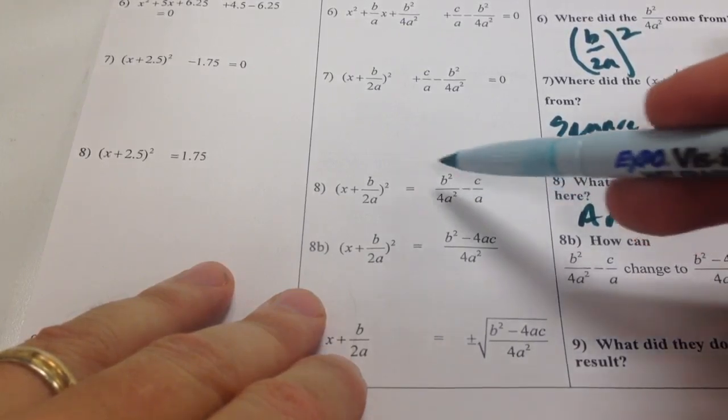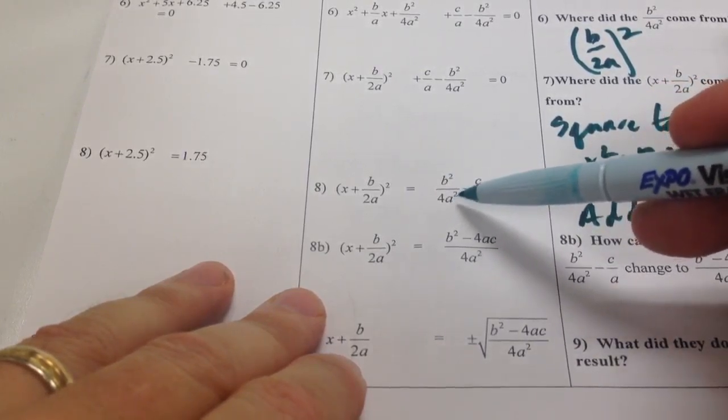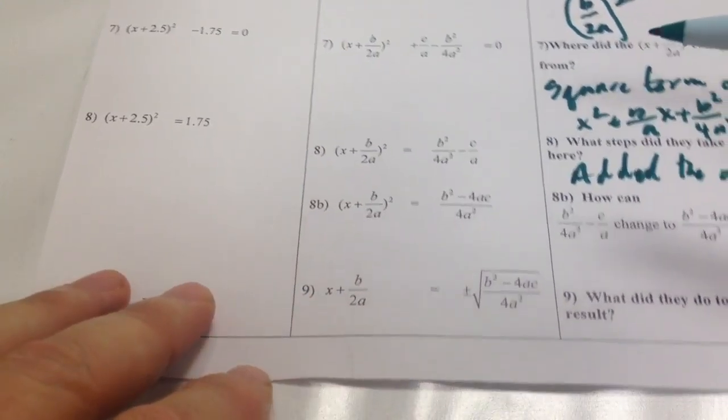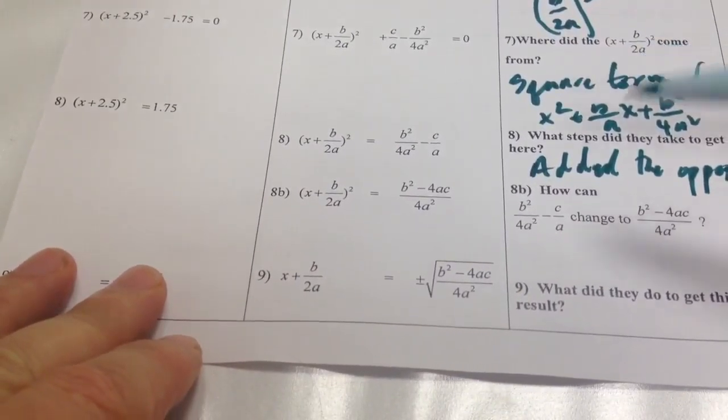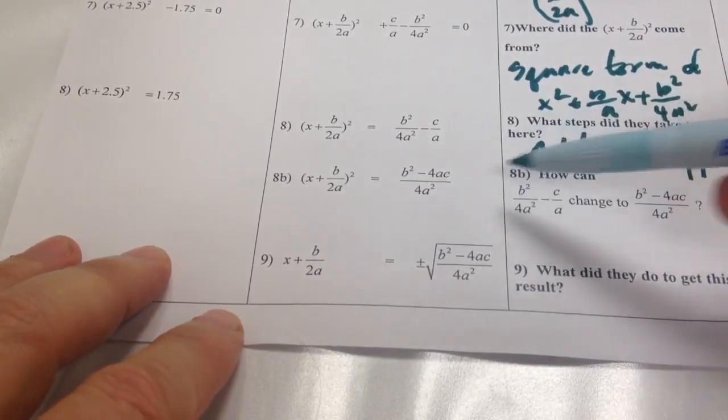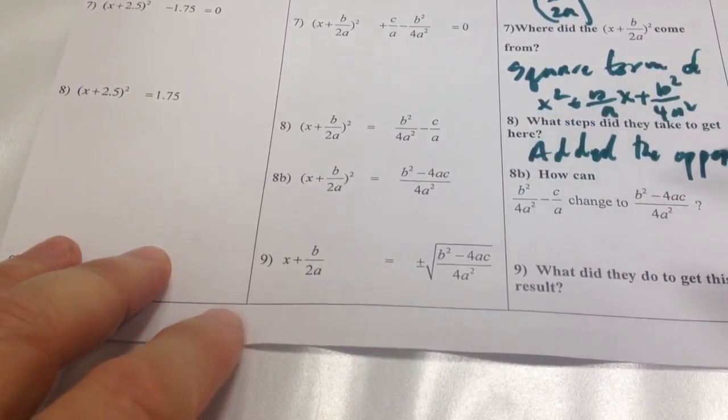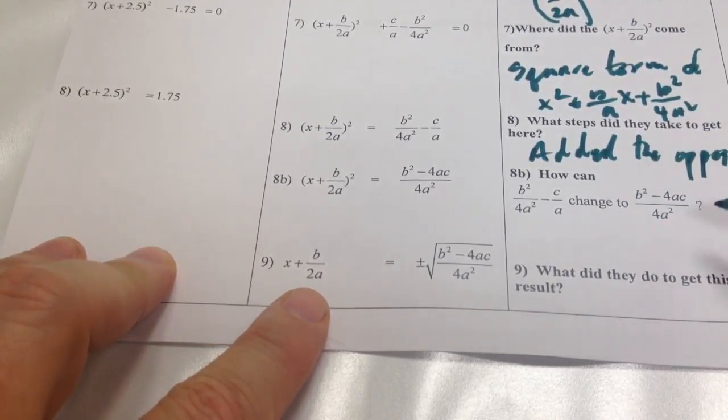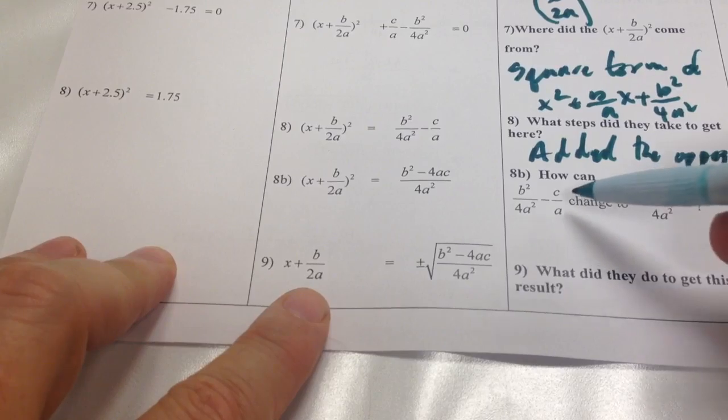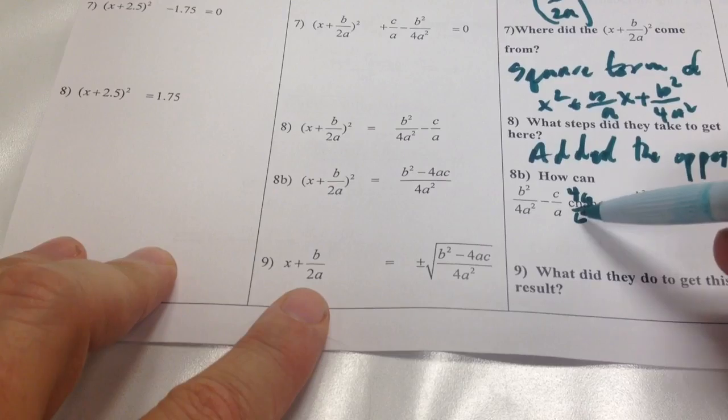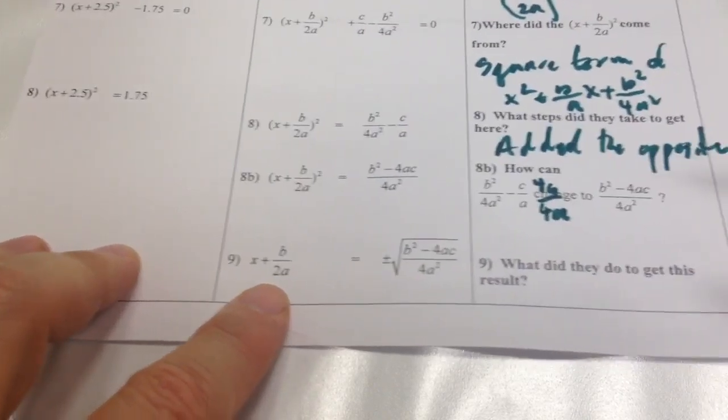Now notice when they do that, they actually had two terms there. They had a c/a and a -b²/4a². So when they move it to the other side, it becomes a -c/a and a positive b²/4a². And they decided to flip around where those terms were, but that's okay. And then they did a little additional step here. They simplified this a little bit. And basically what they did here is they said, oh, we want to get everything over 4a².